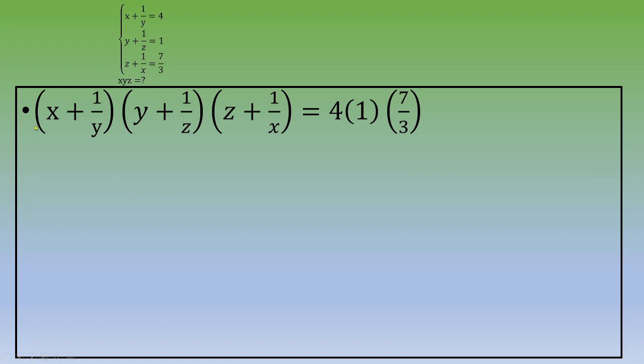Let's begin to distribute. Let's begin with these two parentheses. x times y, x times 1 over z - this is x over z. 1 over y times y - this is 1.